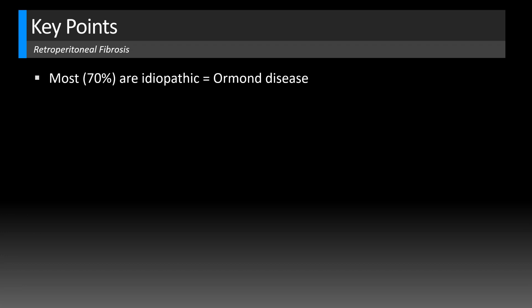Now let's look at some key points for retroperitoneal fibrosis. Most of these are idiopathic — 70% — meaning we don't know what causes it, and that's sometimes described as Ormond disease. There are some known causes, like certain medications, malignancy, infection, previous radiation or retroperitoneal hemorrhage, and even asbestos exposure can increase your risk, but most cases we don't know what causes it.